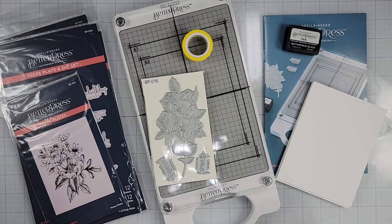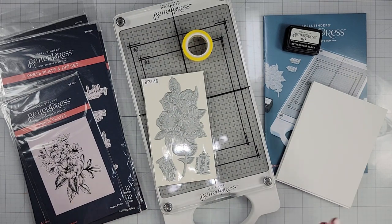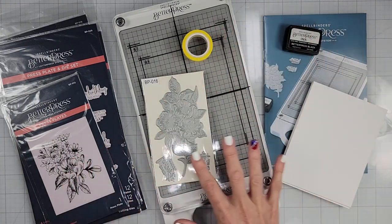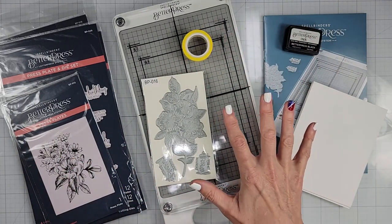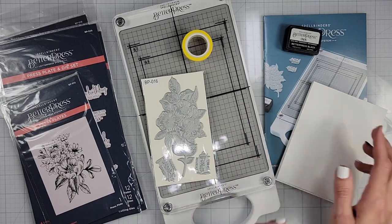Today we're going to make a card playing with the new Better Press system from Spellbinders. There's lots of unboxings out there so I didn't decide to go through all that, but this is all the stuff that you get in your box with just the basic starter kit.